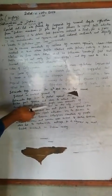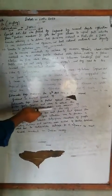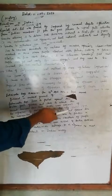General Dyer, the British forces officer in command, blocked all entry and exit points of Jallianwala Bagh and ordered his forces to open direct fire on the innocent people gathered there.